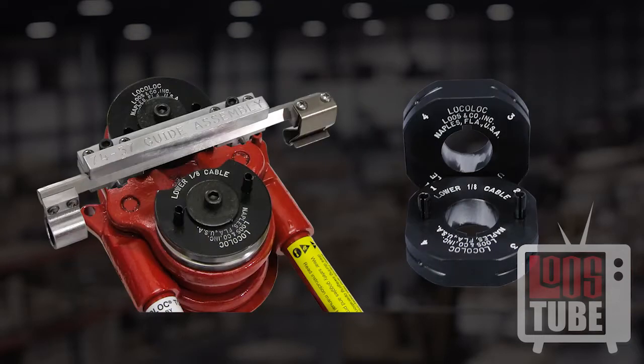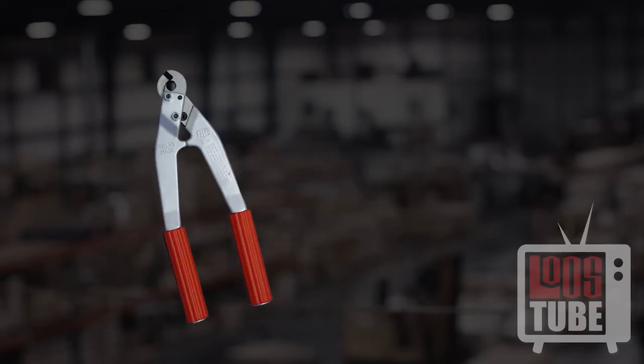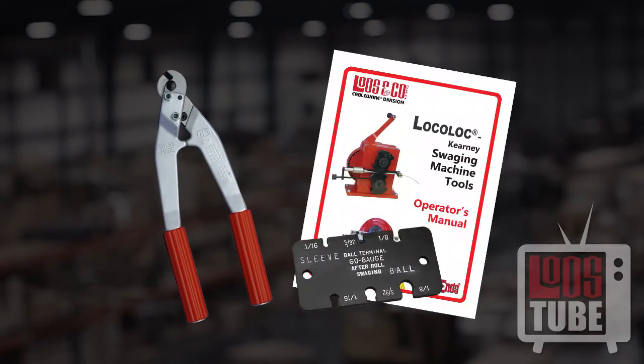You should have already set up your Local Lock M1 Swaging Machine with the proper set of dies and the feed guide attached with the adapter removed. For swaging ball ends, you will need a high-quality cable cutter, an attribute gauge, and your included instruction manual.